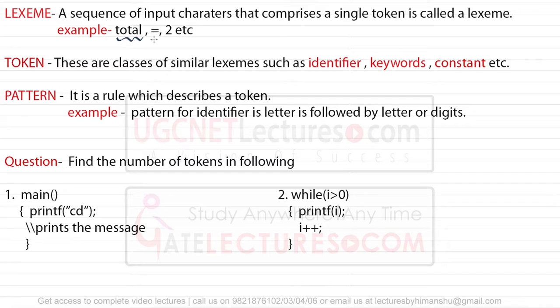For example, here we have 'total = 2' - these are lexemes. When I'm saying token, these are the classes of similar lexemes. Tokens are classes of similar lexemes such as identifiers, keywords, and constants.